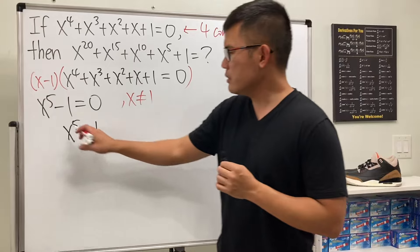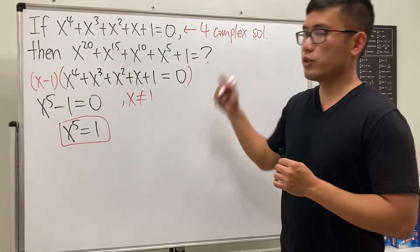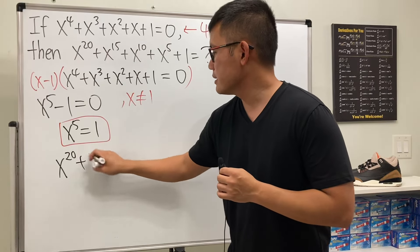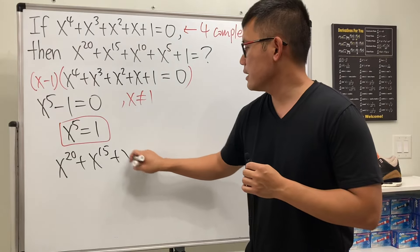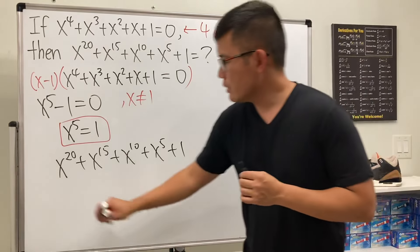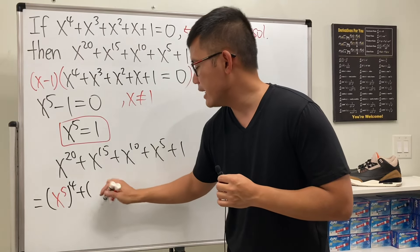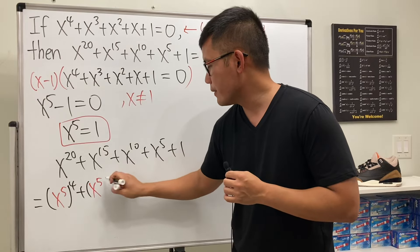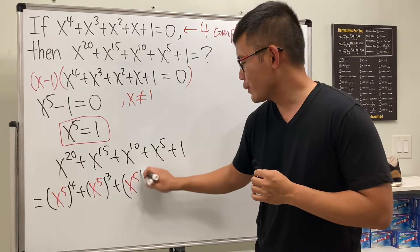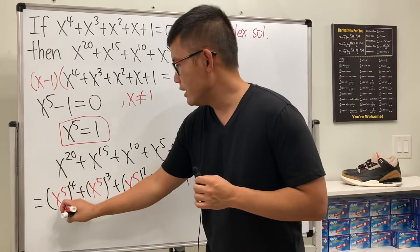So keep that in mind. But how good does this do for us? Well, as I said earlier, this is what we're trying to compute. If we look at x^20 + x^15 + x^10 + x^5 + 1, this right here is just equal to (x^5)^4, then (x^5)^3, then (x^5)^2, then x^5, then plus one.